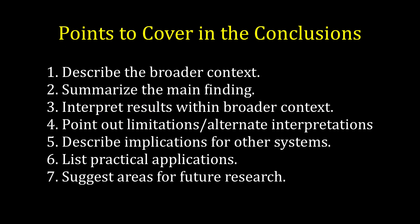Here I've made a list of points you might address in a conclusion section. First, always put your study's topic into a broader context to show the reader why they should care about your results. You also want to remind your reader of your main finding by briefly summarizing it and then interpret that finding in relation to the broader issue. You can also point out the limitations of your study or alternative interpretations. You can also describe implications of your findings for other types of systems, describe any practical applications of your results, and finally, you may wish to suggest areas for future research. You don't need to address all of these in every paper or in this exact order — they are just suggestions to aid in writing your conclusions.